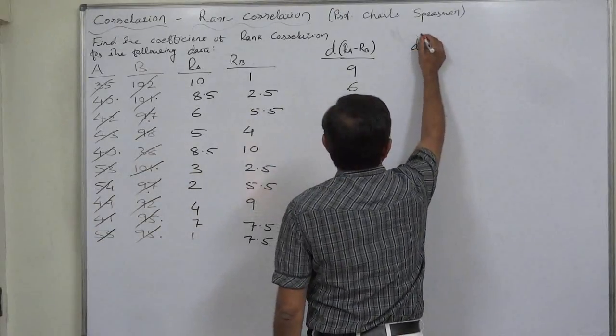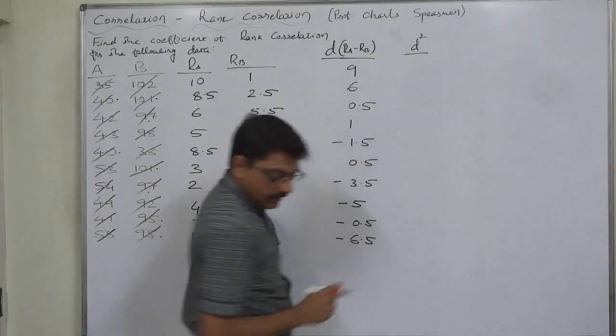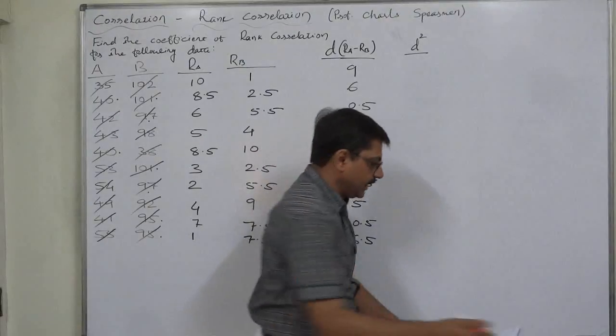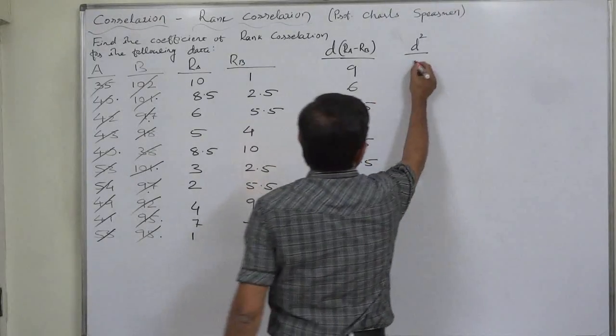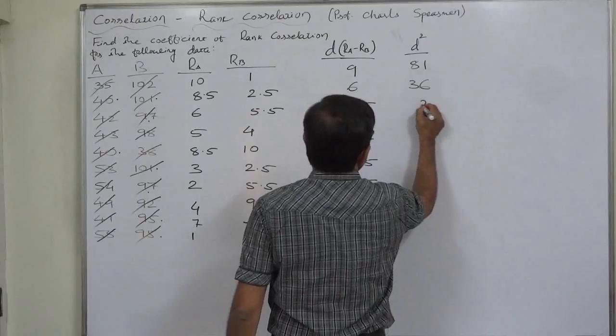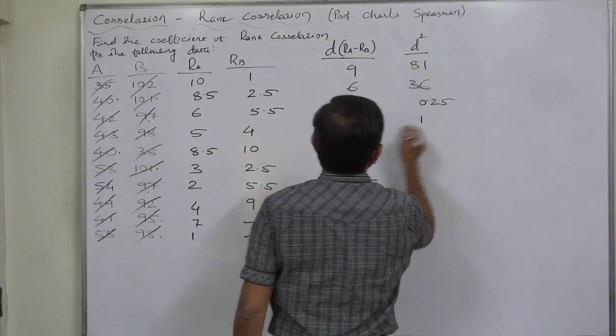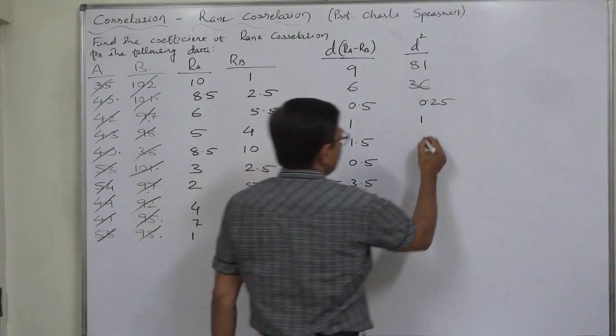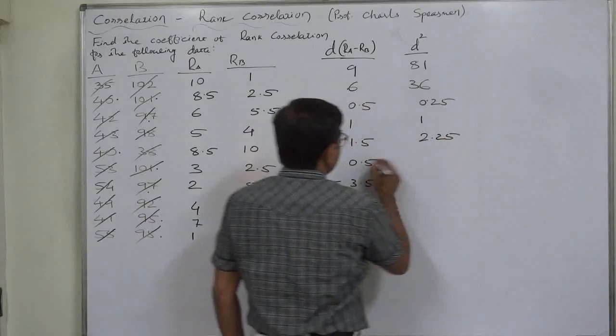Take care at the time of taking squared values. I have already written the squared values. 9 squared is 81. 6 squared is 36. 0.5 squared is 0.25. 1 squared is 1. 1.5 positive or negative squared is 2.25. 0.5 squared is 0.25.